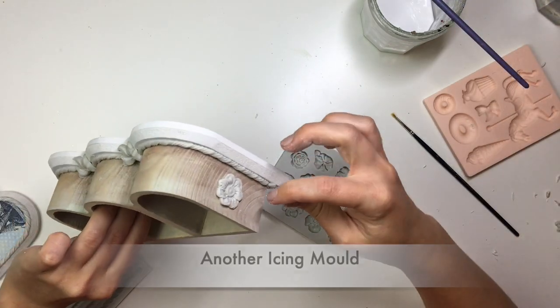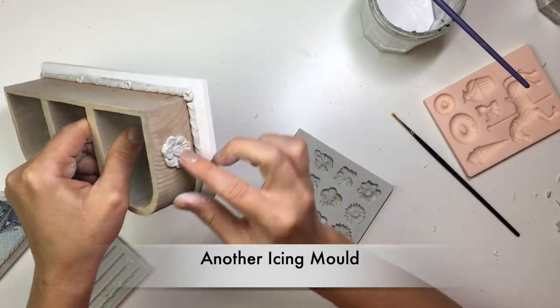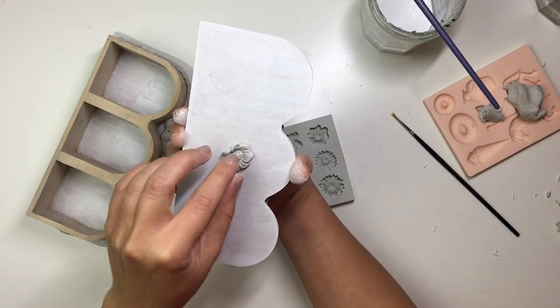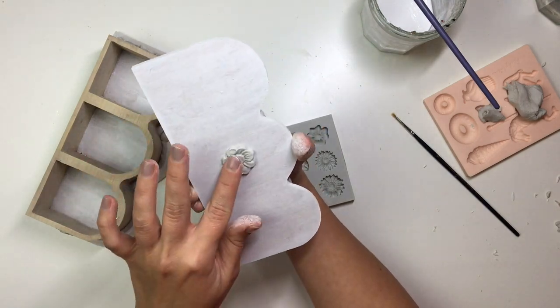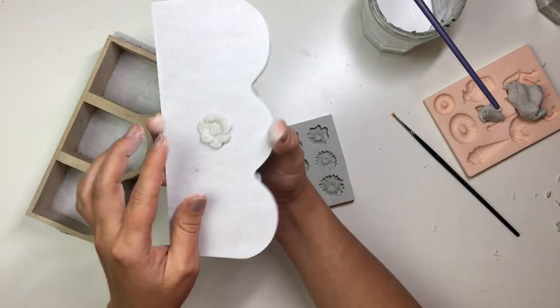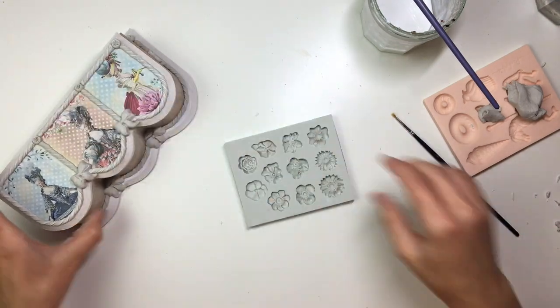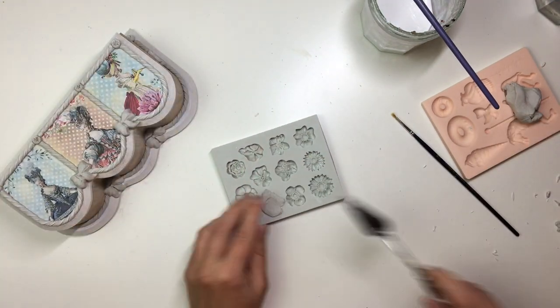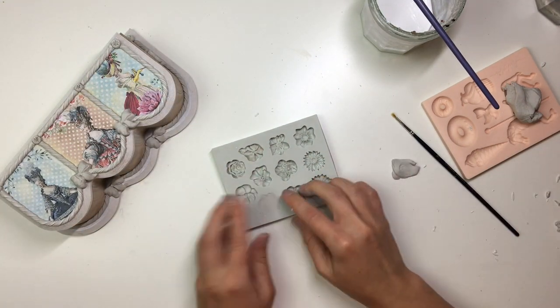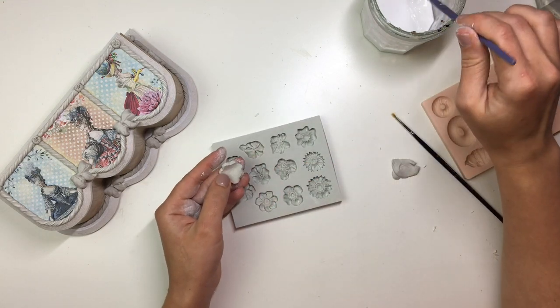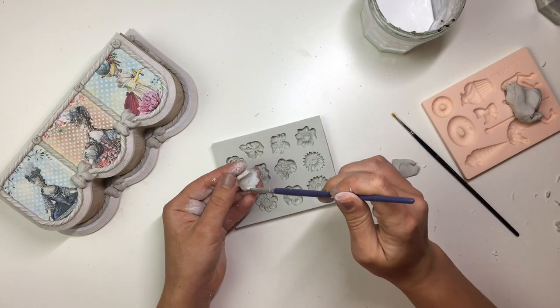And then I also took this flowery mold, again this is an icing mold, and made some flowers to go on the inside of the lid and on each of the ends of the body of the jewelry box. As you can see, a lot of molds, so basically I just kind of applied them wherever I felt they were necessary. And then I just glued them on and left them to dry for about 24 hours.